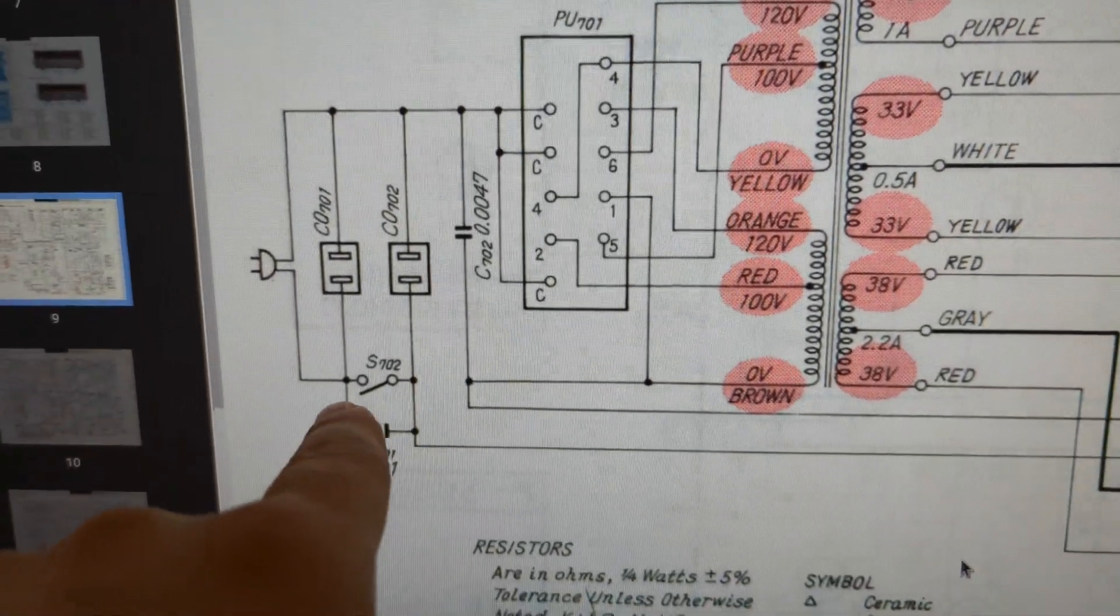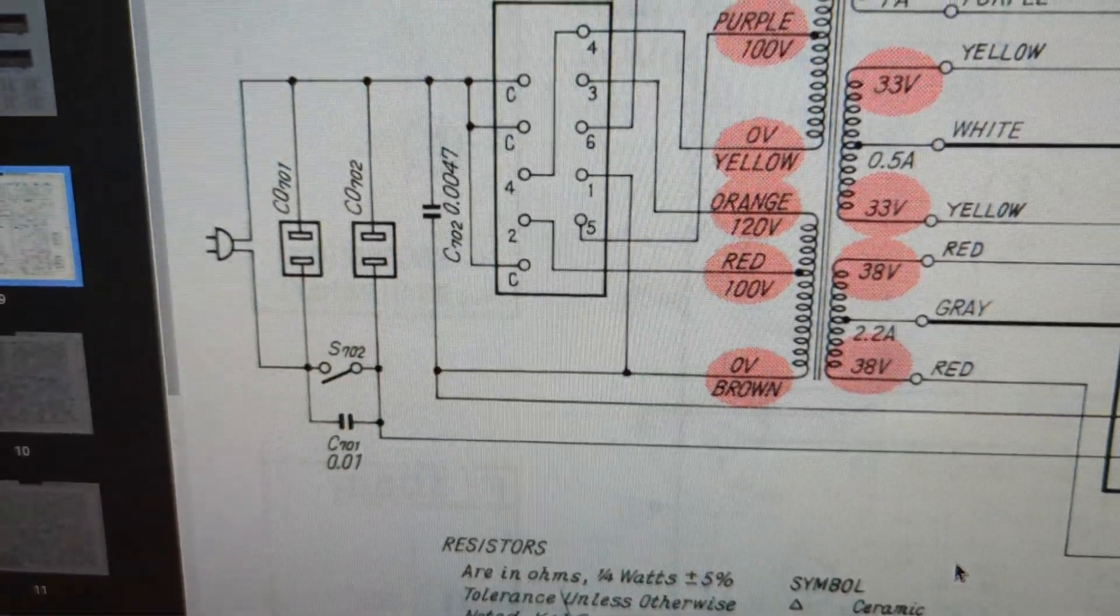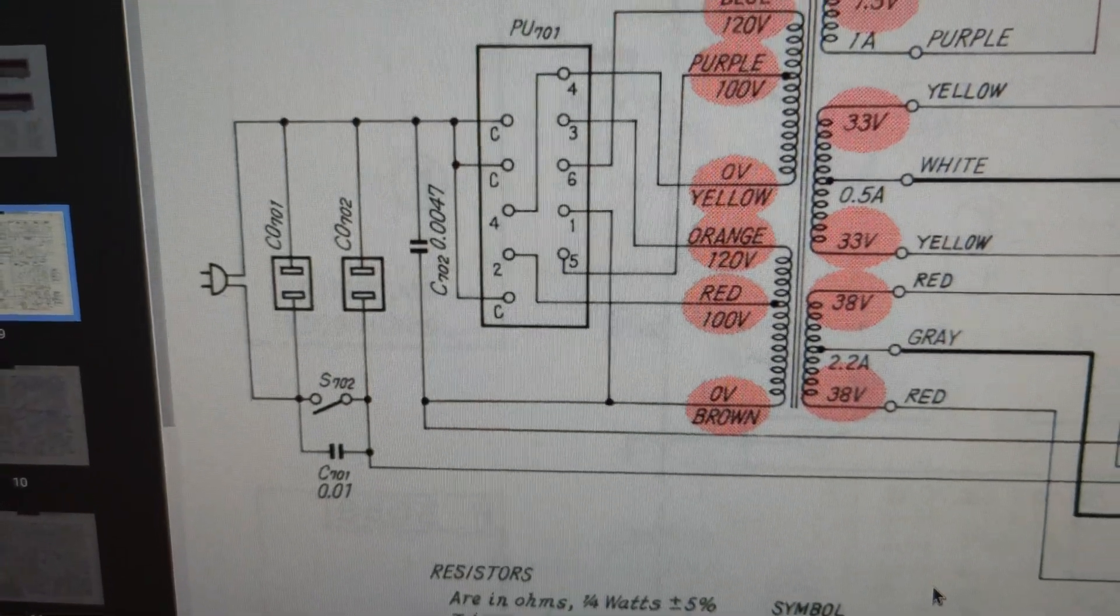And then it comes back right here to the other terminal of this capacitor. So basically, after the switch and the fuse, this capacitor is right between live and neutral. And this is the sort of capacitor that I'm talking about.